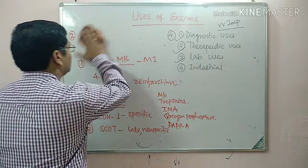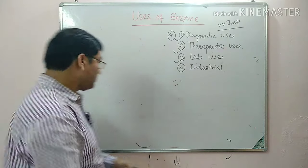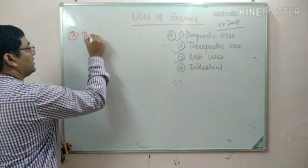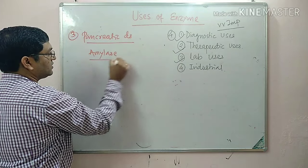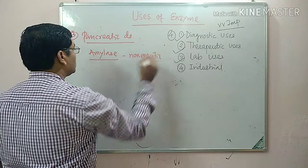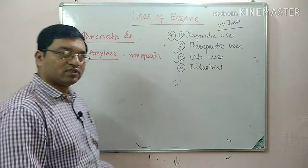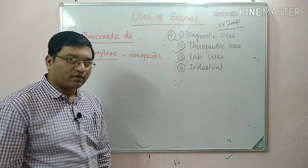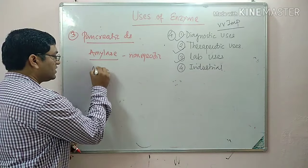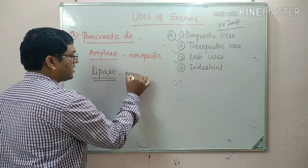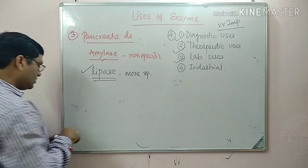The third category is pancreatic diseases. Markers for pancreatic diseases include amylase, which is an important marker but is non-specific because amylase concentration also increases in parotitis. There are two types of amylase — salivary and pancreatic. Salivary gland infection also leads to increased amylase levels, as do various abdominal conditions, tumors, neoplasm, and perforation. Lipase is also used.